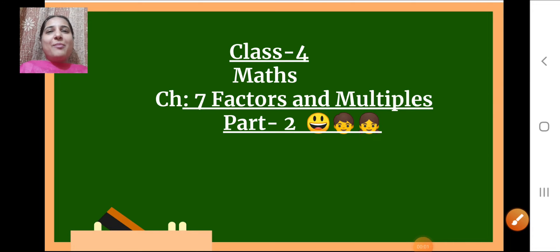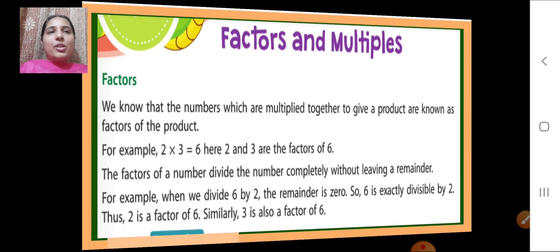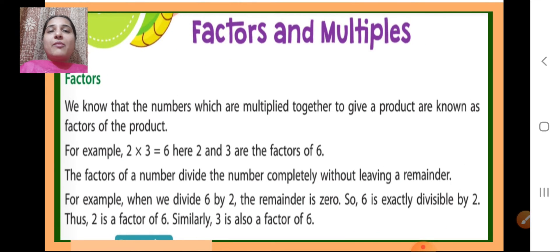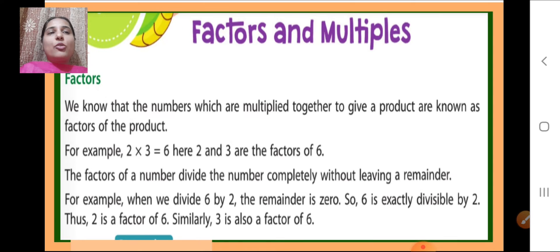Hello children! So let's continue chapter number 7, that is Factors and Multiples. Today we will see part 2. Last class we discussed about factors. What are factors? The numbers which are multiplied together to give a product are known as factors of the product.